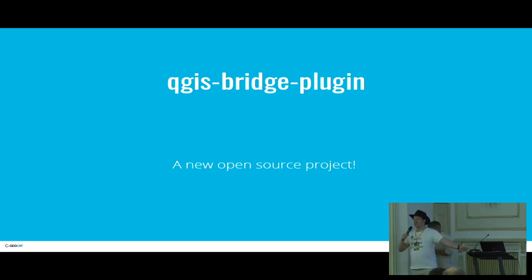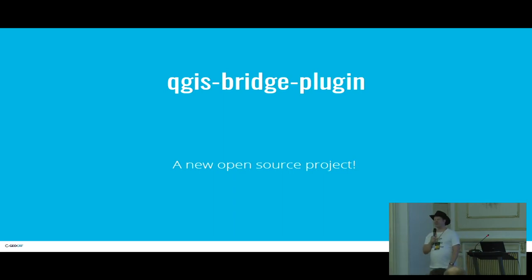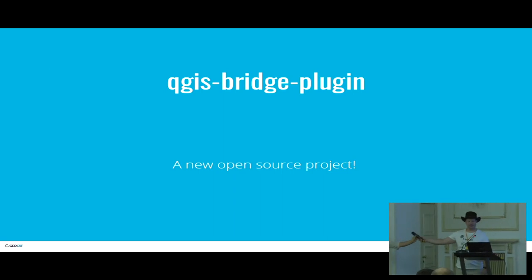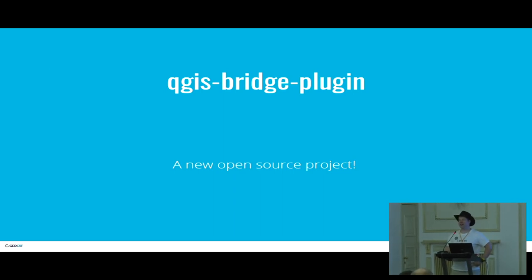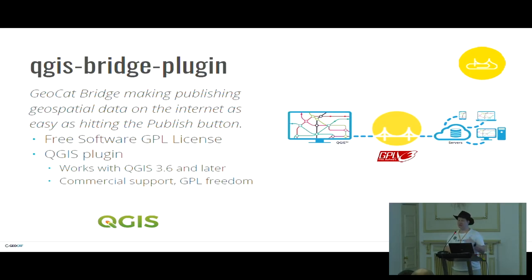As many of you know, I'm an open source contributor — I've got the shirt to prove it. I'm here to announce a new open source project: the QGIS Bridge plugin. We're starting this as an open source project rather than a proprietary project, which is what Bridge 3 was. It's a QGIS project with a GPL license, and it's available to our customers who can access the code straight from GitHub.